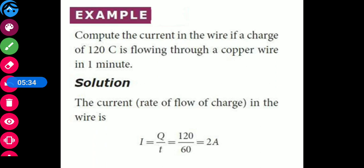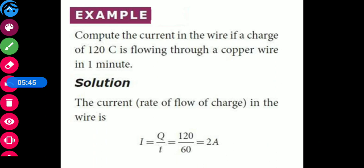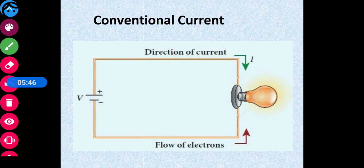For example, 120 coulombs of charge flows through a copper wire in one minute. From this we can calculate that the current flowing is 2 ampere.